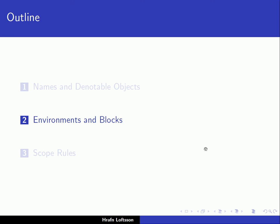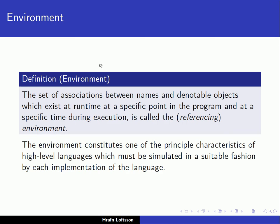We continue our discussion on names, and the second part is on environments and blocks. The term 'environment' is important when we discuss names. The set of associations between names and denotable objects which exist at runtime at a specific point in the program and at a specific time during execution is called the environment, or the referencing environment.